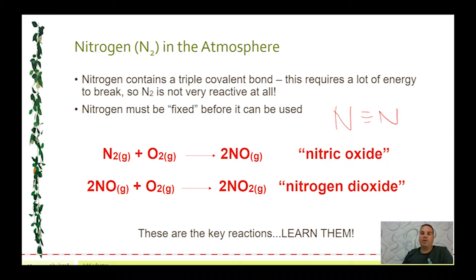There are a couple of ways that nitrogen fixation happens. It can happen naturally via lightning or nitrogen-fixing bacteria in plants. It can also happen artificially — in combustion engines, which supply enough energy to break that nitrogen triple bond. You can also have supersonic aircraft, which supply a lot of energy to break that nitrogen triple bond as well.